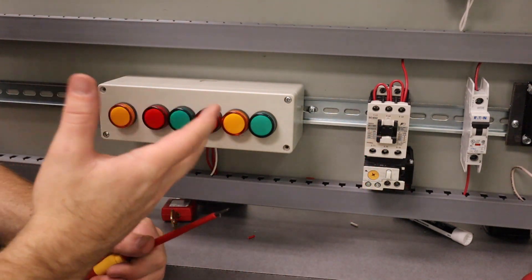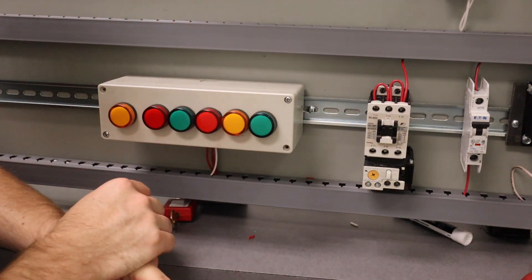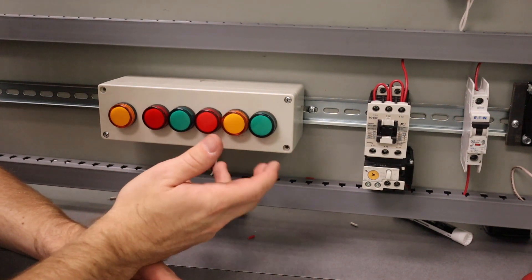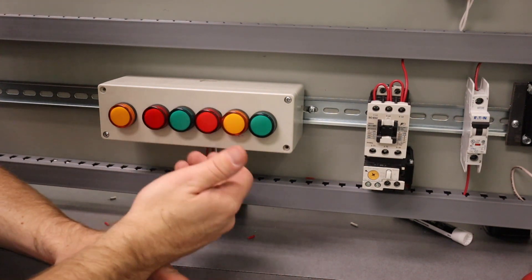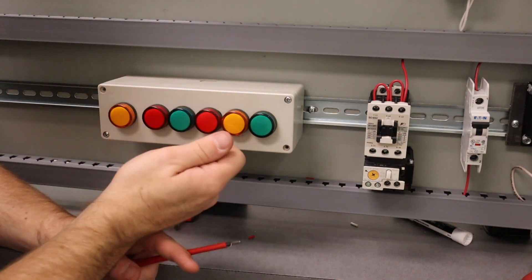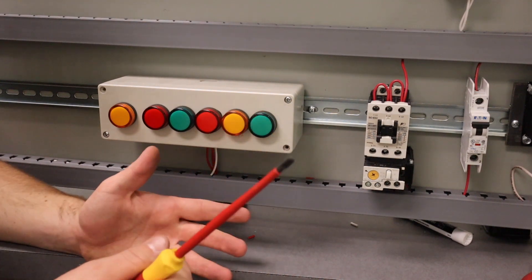So literally every time we turn this contactor on, it's connecting those contacts. And remember those contacts are extra heavy duty. They can handle like 600 volts. And they have a very high quality magnet that really sucks them in tight. So that way there's no arcing or anything like that.